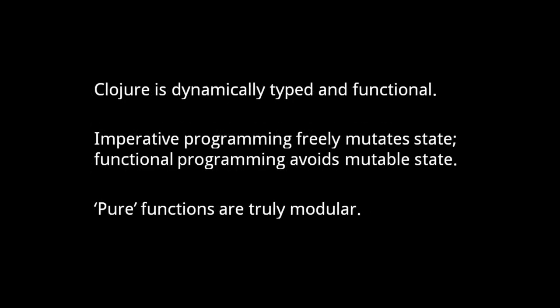What really makes Clojure compelling, however, and what sets Clojure apart from all other languages, is Clojure's unique approach to functional programming. Functional programming is a style of programming in contrast to what's called imperative programming. The key distinction between functional and imperative programming is how they treat mutable state. Mutable state, in short, is any kind of data that may change.